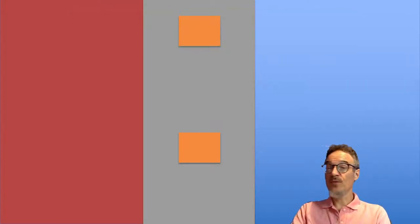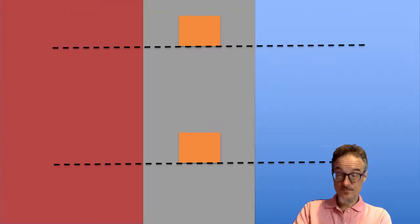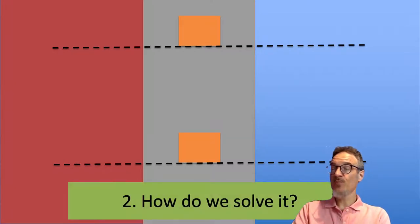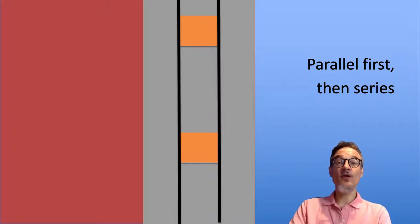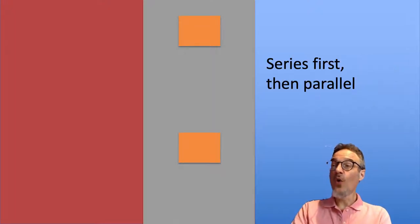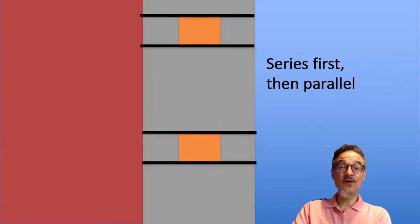So we looked at this problem of compound insulation. How do we solve this problem? We've got a wall structure with some wooden posts in it and the rest of it's insulation. We can solve it by first splitting the wall up in parallel. So we can work out each layer using the parallel calculation and then put them in series. Or we can do it the other way around. We can look at them in series first and then calculate the parallel.